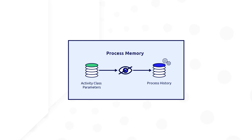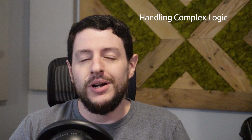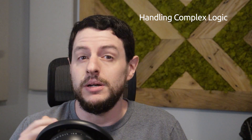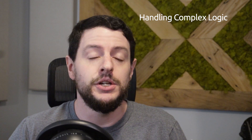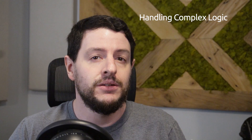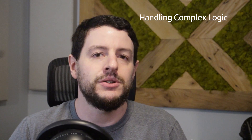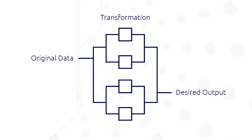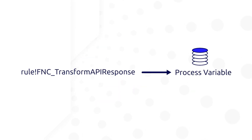Like hidden process variables, activity class parameters are not saved in the process history. Does your process require an expression to handle complex logic, sometimes dealing with data sets of unknown size? Consider using an expression rule. In the previous example, you learned about transforming data within a smart service. In cases where you need to do more complex transformations, it would be beneficial to handle the logic in an expression rule,